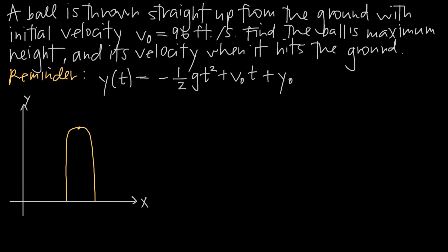In this video we're going to be doing a vertical motion problem, which is just an application of what we already learned about the position function. In this particular problem we've been told that a ball is thrown straight up from the ground — perfectly vertically, not out to the front or behind the person — from the ground with an initial velocity of 96 feet per second.